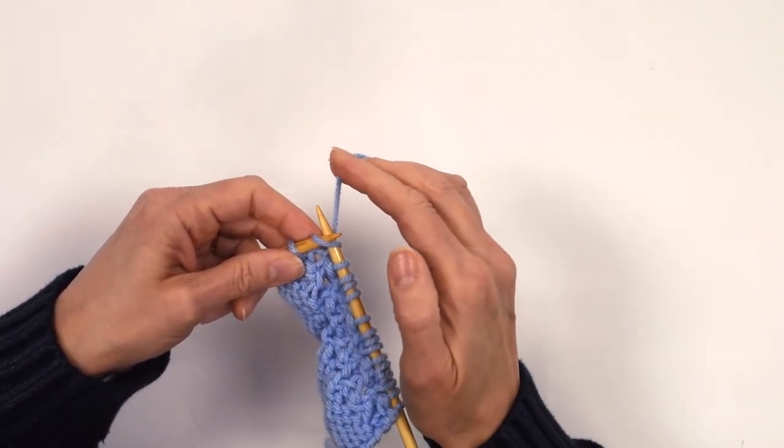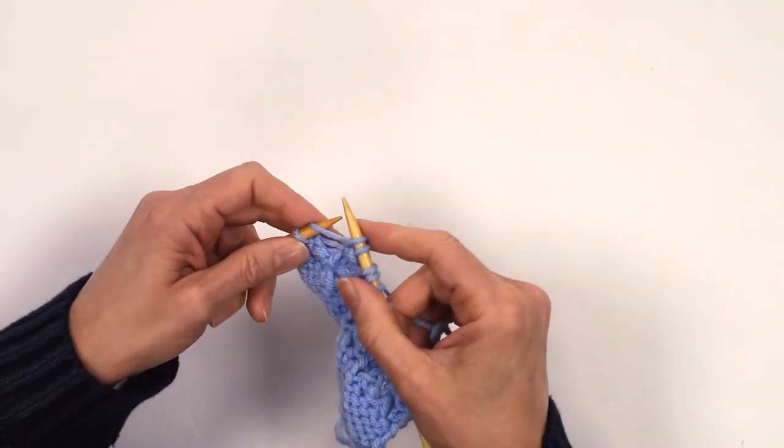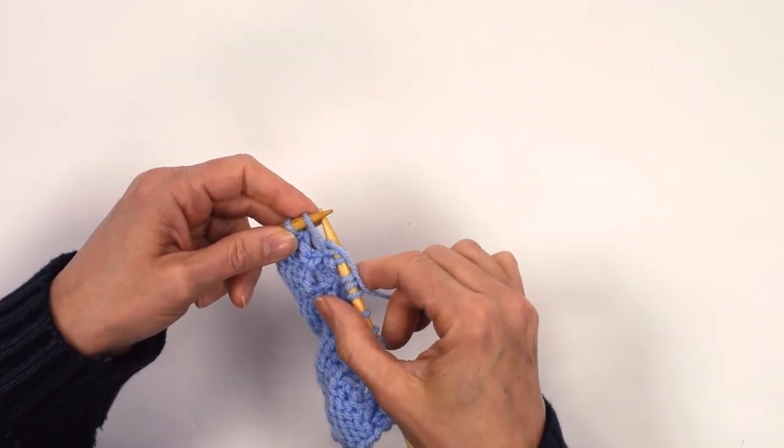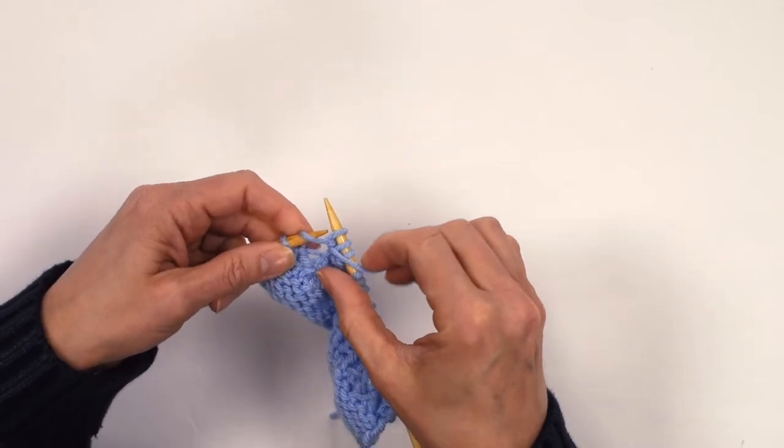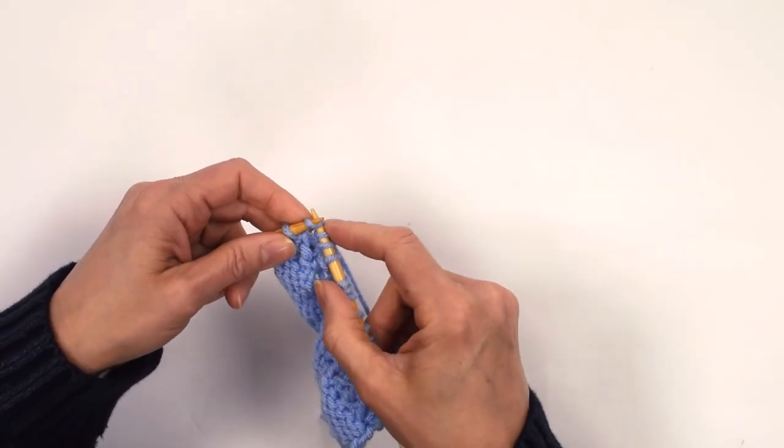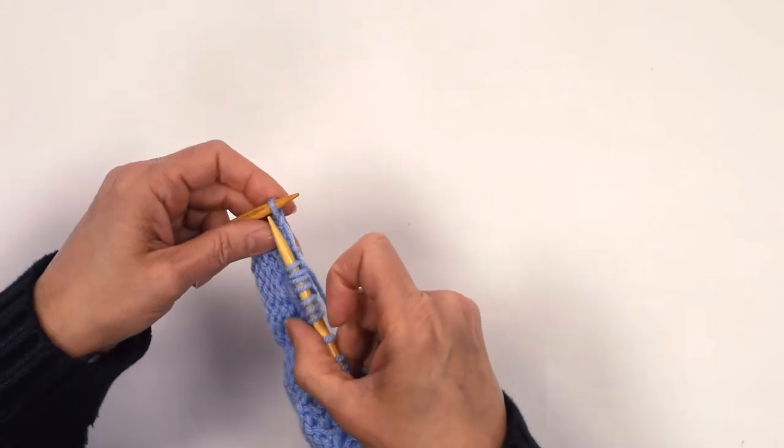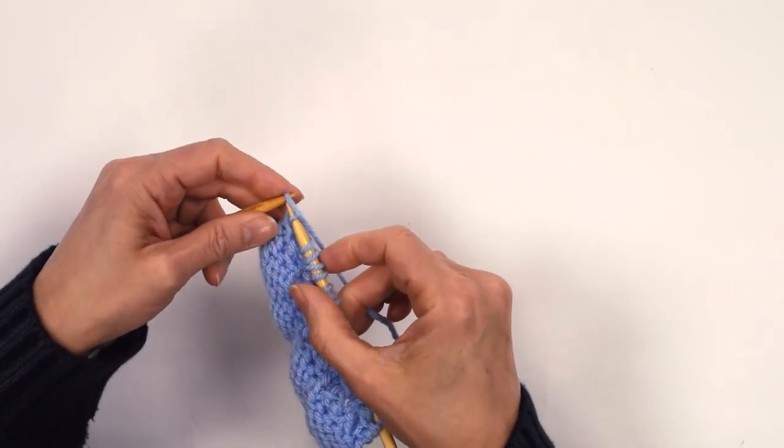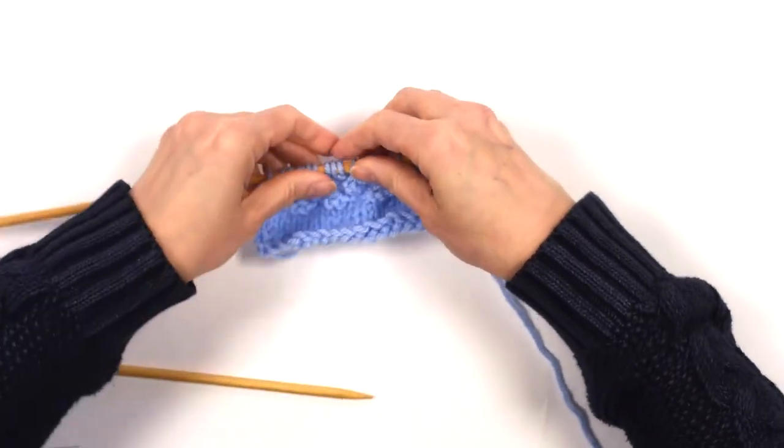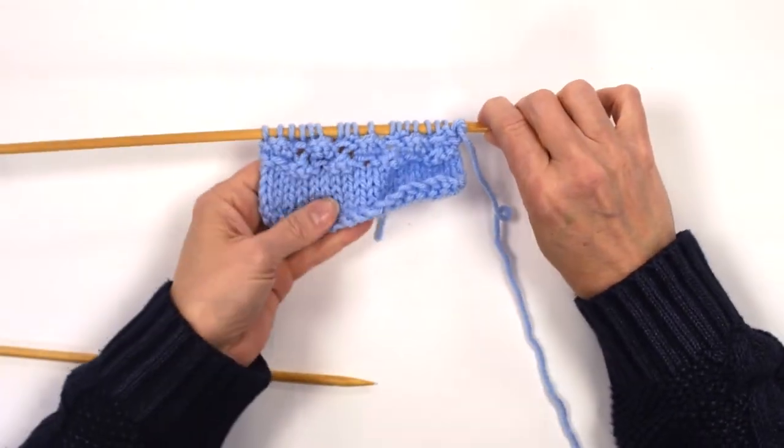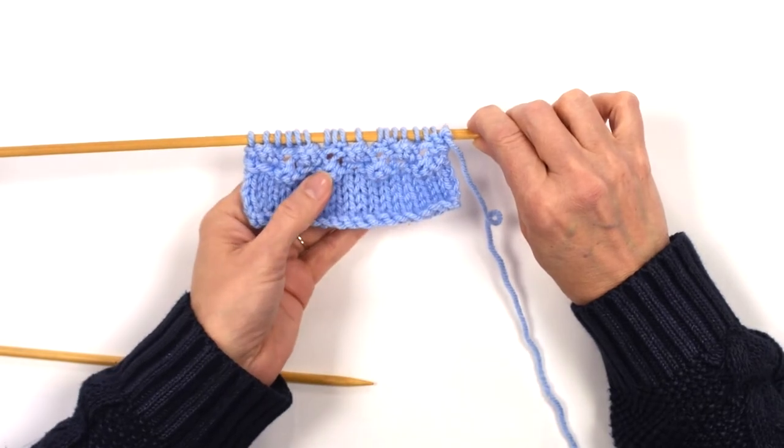And then finally, it's knit into the front, bring the yarn back between the needles, purl. If I turn this over, you'll see how you're starting to get a rather nice bobbled effect here.